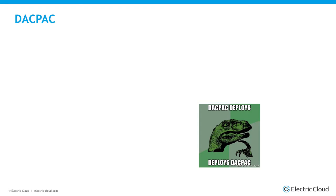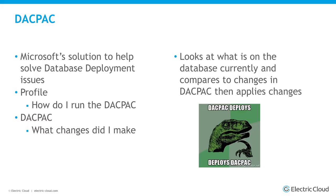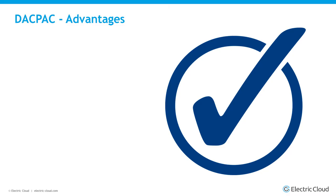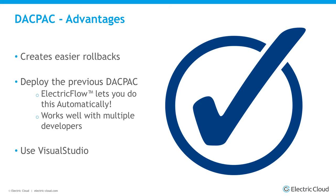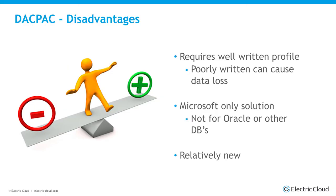Microsoft has a DAC pack, which is Microsoft's attempt to solve this. It has a profile and a DAC pack — it'll tell you what changes you made and automatically do that deployment by looking at what's currently on the database and applying the changes. Advantages: it creates easier rollbacks, and you can deploy the previous one if you need to roll back. You can also use Visual Studio for handling changes. Disadvantages: if your profile is not well written, you can lose data. It's a Microsoft-only solution, so if you use Oracle, you're stuck. And it's relatively new, so they're still working out some kinks.